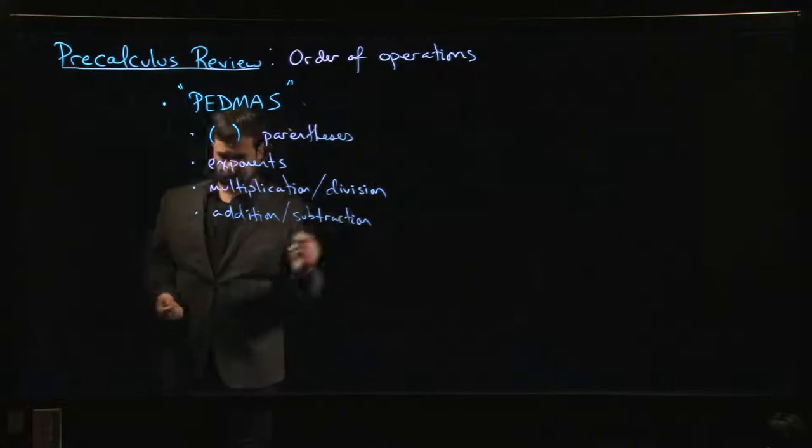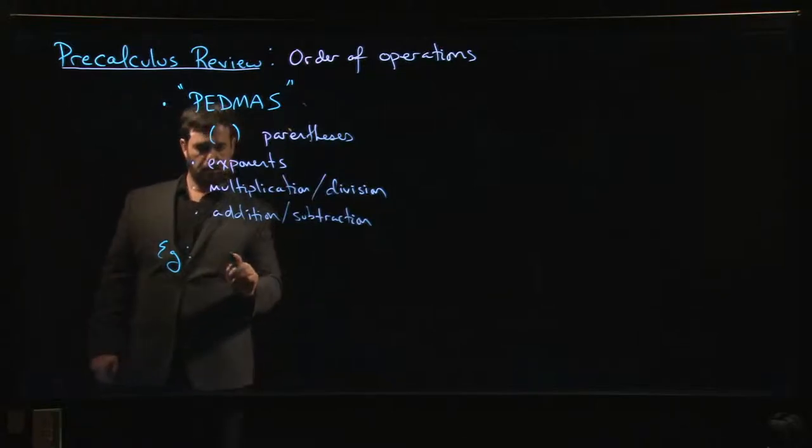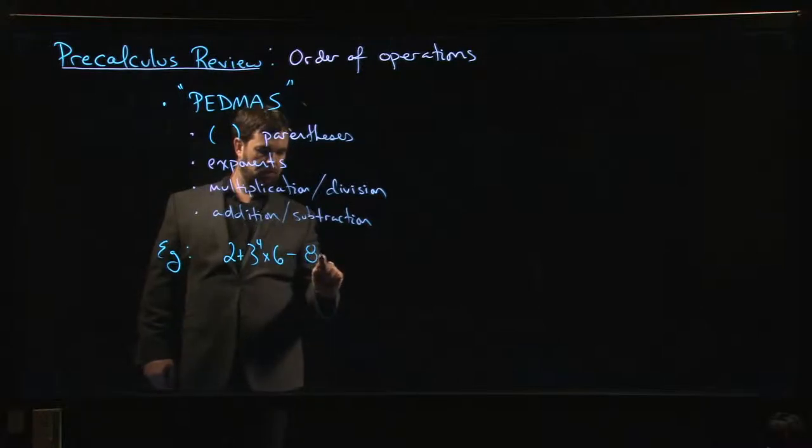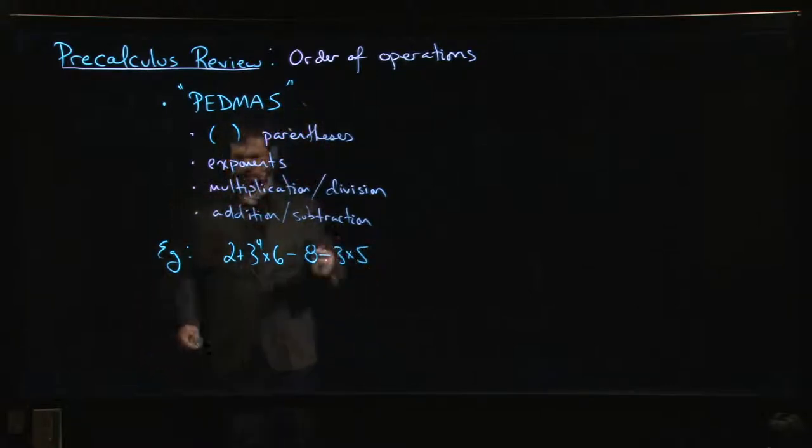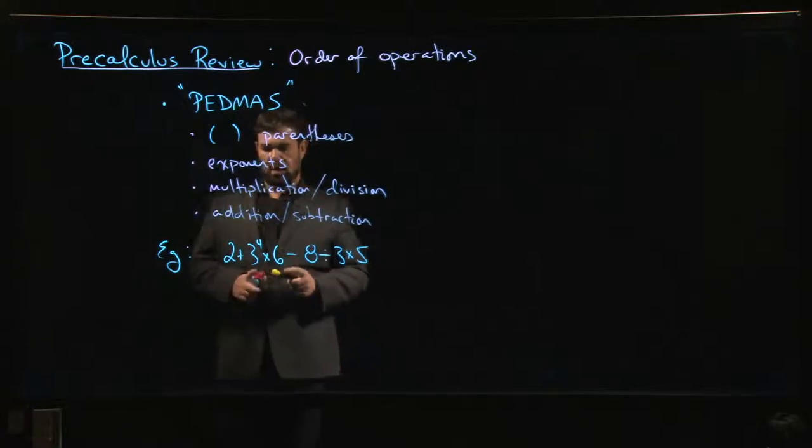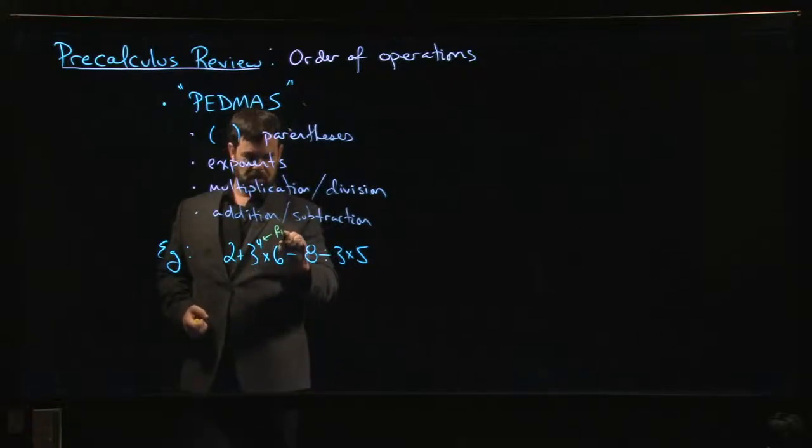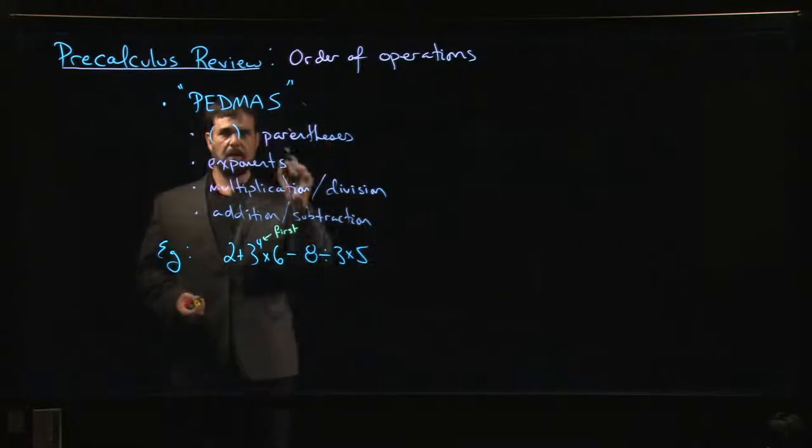Let's say I give you 2 + 3^4 × 6 - 8 ÷ 3 × 5. There's an expression with no parentheses but all the other arithmetic operations. If you're carrying things out in order, the exponent should be the first thing you do. But here's one thing that trips people up: D then M—does that mean we should do division before multiplication?